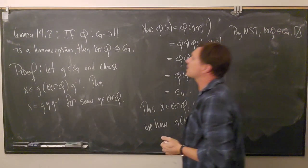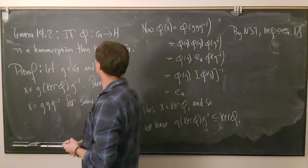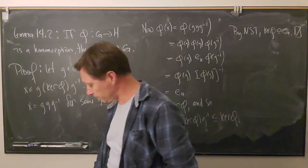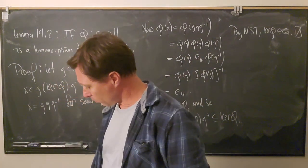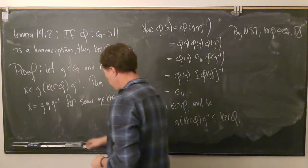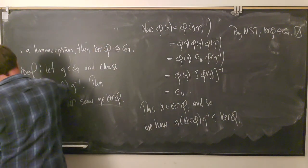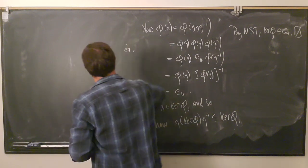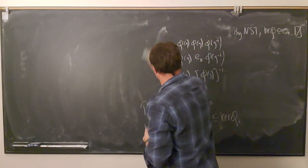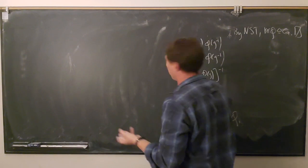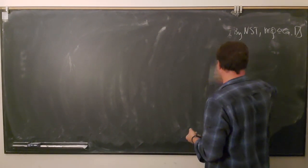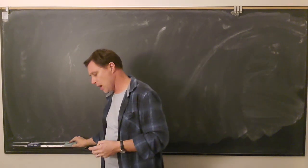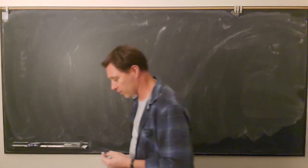That completes the proof. This tells us here's one way to always come up with normal subgroups: every time we have a homomorphism, that kernel is going to be a normal subgroup. Now, we've defined this thing called normal subgroup, but the question is why. There's this strange property that left cosets have to equal right cosets, and it's a fair question — why would anybody actually care about such a thing? So I want to talk about why we ever came up with this idea.